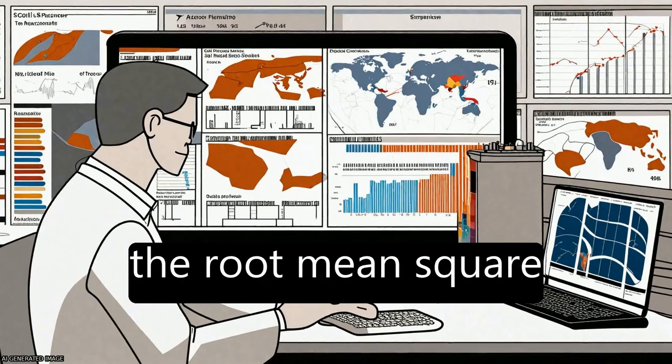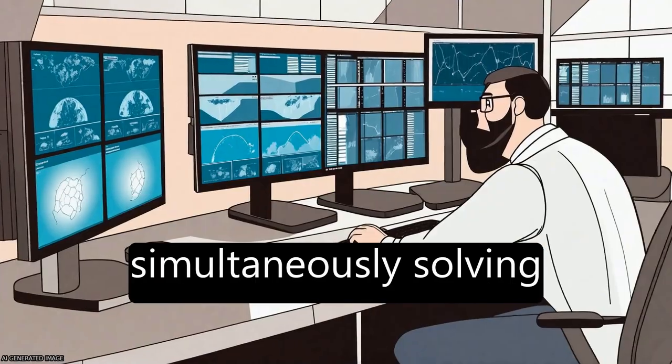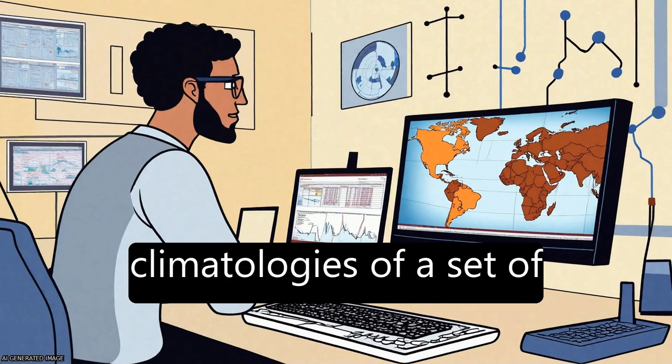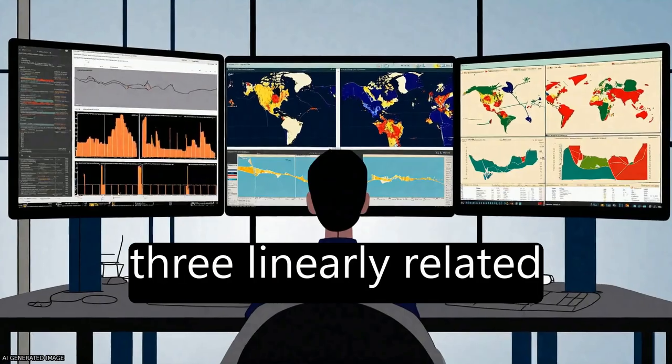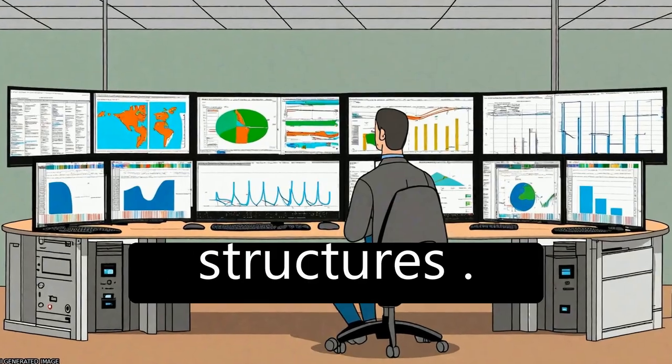The technique estimates the root mean square error while simultaneously solving for systematic differences in the climatologies of a set of three linearly related data sources with independent error structures.